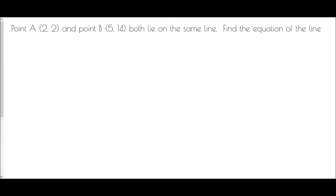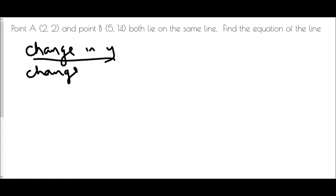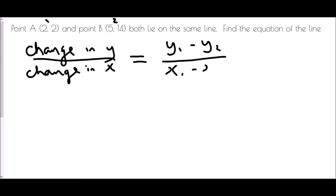In the next set of examples I haven't given any axes. We've got point A (2, 2) and point B (5, 14) both lying on the same line — find the equation. How can we do this without drawing them? We begin with the gradient. I'm going to call this coordinate 1 and this one 2, and use the formula y1 minus y2 over x1 minus x2.